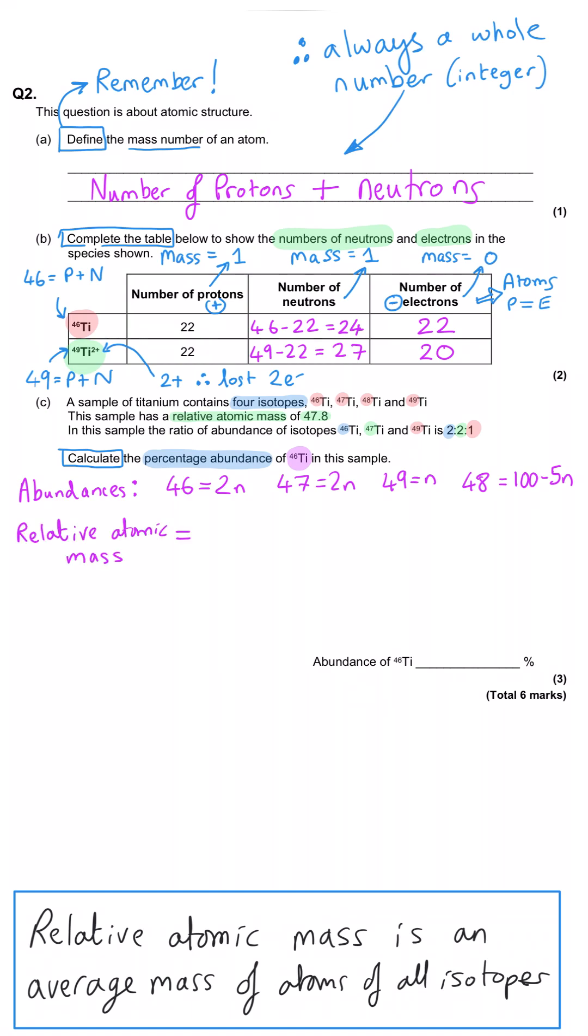When we calculate the relative atomic mass, we do this by adding together the product of the mass number multiplied by the abundance, and then add that to the mass number multiplied by the abundance of the next isotope. And we keep going on until we run out of isotopes. And then we divide it by the sum of the abundance on the bottom, which is usually a percentage, so 100, but not always. Since we know the relative atomic mass is 47.8, we then work this out by doing 46, the mass number multiplied by the abundance 2n, add that to 47 multiplied by 2n, add that to 49 multiplied by 1n, and then add that to 48 multiplied by this complicated looking abundance of 100 minus 5n.